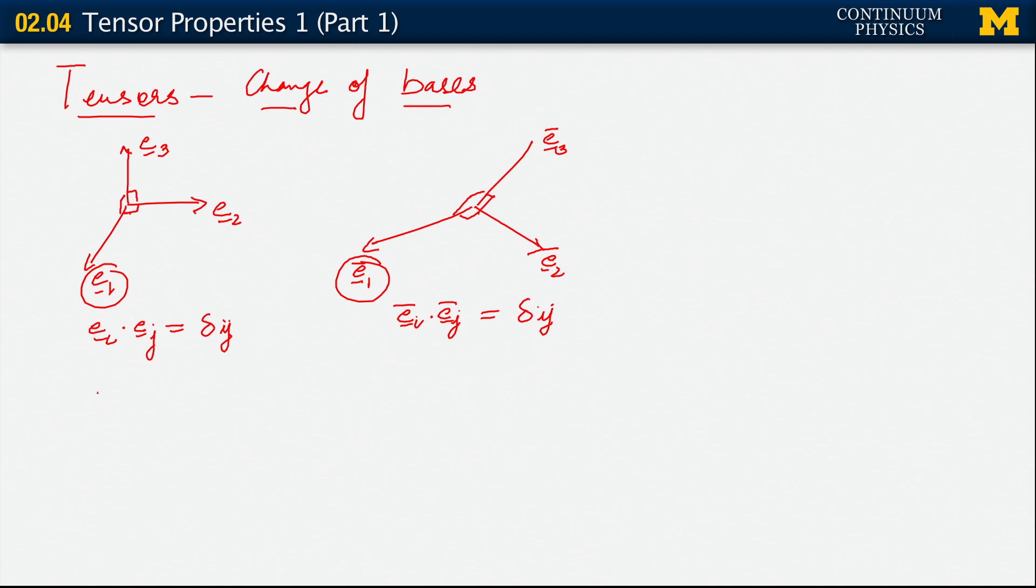So we say that there must be a tensor relating E1 bar to E1 and so on. And by so on, what I mean is that, in general, there must be a tensor relating likewise E_i bar to E_i. When we extend that idea, we say that this tensor must, in general, relate any E_i bar to E_i.